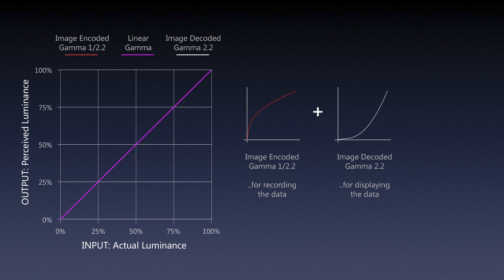Here's how it works: the linear gamma — a straight line — is how the camera captures. We want to manipulate this curve so the end result matches the way our eyes see, compensating for our nonlinear vision while still appearing linear. We first bend the curve in one way — that's image encoding, or gamma encoding. Then we bend it back — that's decoding.